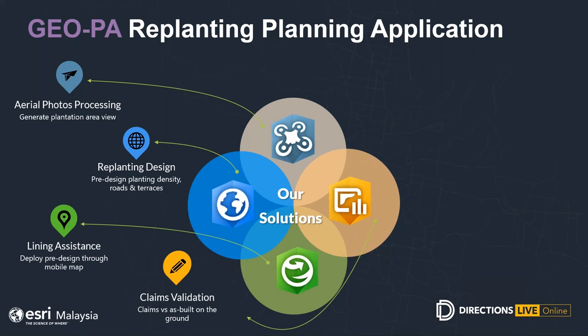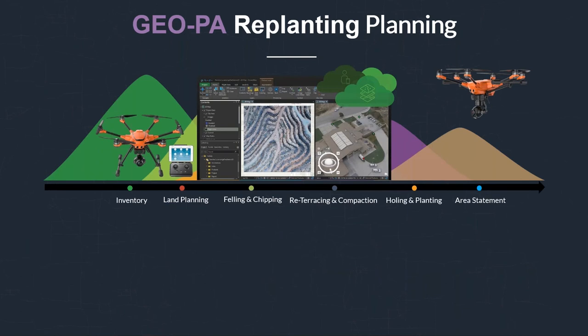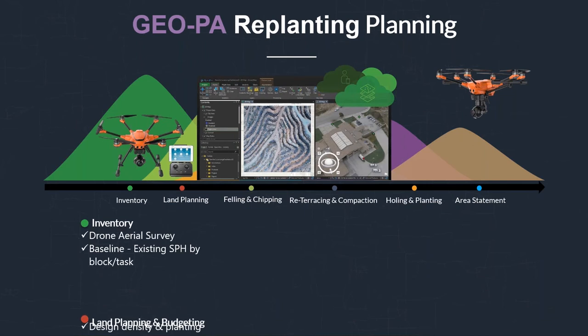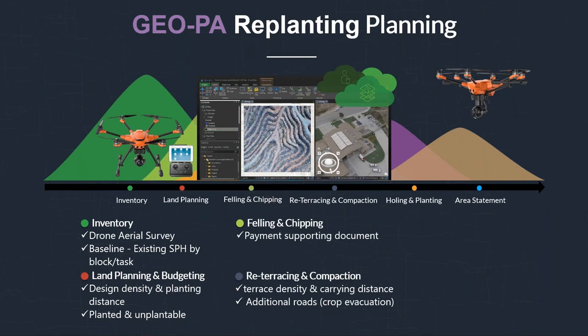The benefits of this solution include cost control on replanting activity using drone images to monitor replanting progress. Return on investment is favorable as drones are relatively cheap to deploy today. This will increase your efficiency with area surveys — bringing back thousands of area images from the field quickly within an hour of operation for audit. The workflow spans from inventory and baseline for contractor claims, land planning and budgeting based on the pre-design model, felling and chipping claim monitoring, pre-terracing and cooperation for contractor claims, lining and planting, and finally the new planting area statement declaration.